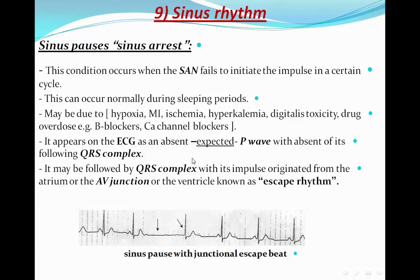It appears on the ECG as absence of an unexpected P wave, with absence also of its following QRS complex. It may be followed by a QRS complex with its impulse originating from the atrium, the AV junction, or the ventricles as an escape rhythm.